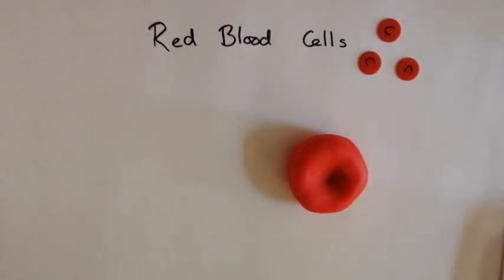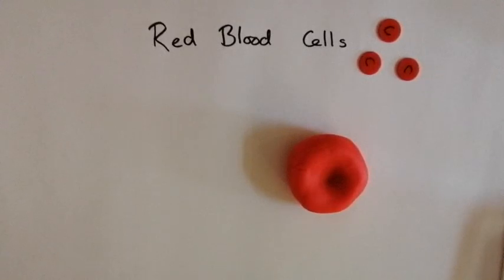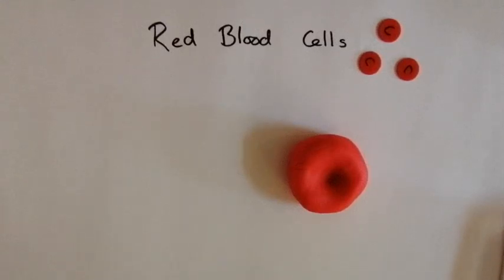Hi, this is Mrs Sykes and this video is a focus on red blood cells. Red blood cells are an example of a specialized animal cell, so we're going to have a look at how its structure is related to its function, and that's usually how these sorts of exam questions are phrased: describe how the red blood cell's structure is related to its function.